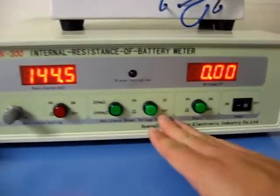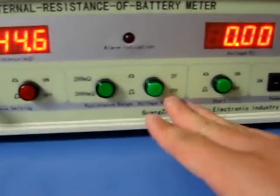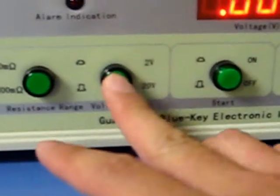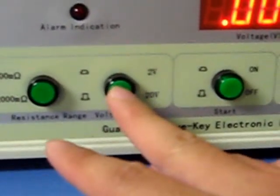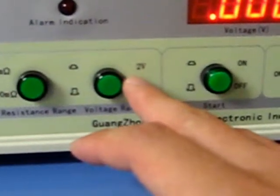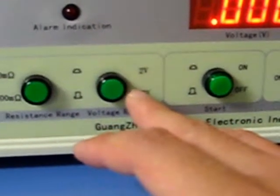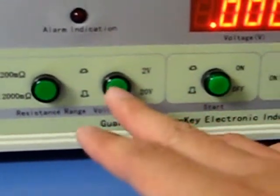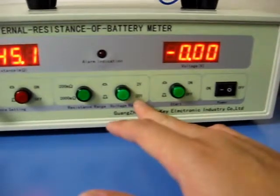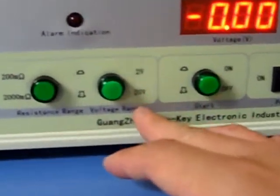Here you change the voltage settings. If you push the button down, you can test batteries up to 2 volts. Or if you depress the button, you can test batteries up to 20 volts for battery packs or single cells.